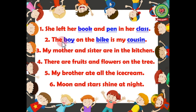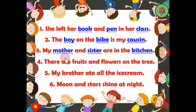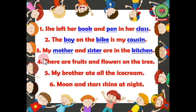Let's come to number three: my mother and sister are in the kitchen. Mother — name of a person, so noun. Sister — name of a person, so noun. Kitchen — name of a place, so noun. Therefore we will underline three nouns here: mother, sister, and kitchen.